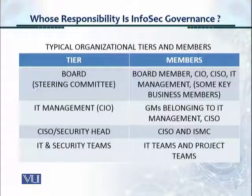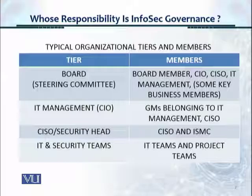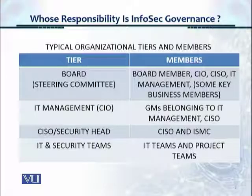In IT management, you have the CIO and all the direct reportees or general managers belonging to IT management, and the Chief Information Security Officer or the head of IT security. Then you have the next tier, which is the CISO or the security head. At this tier, the CISO works with the Information Security Management Committee, which the CISO has formed in order to run the daily or weekly activities of the information security transformation project.